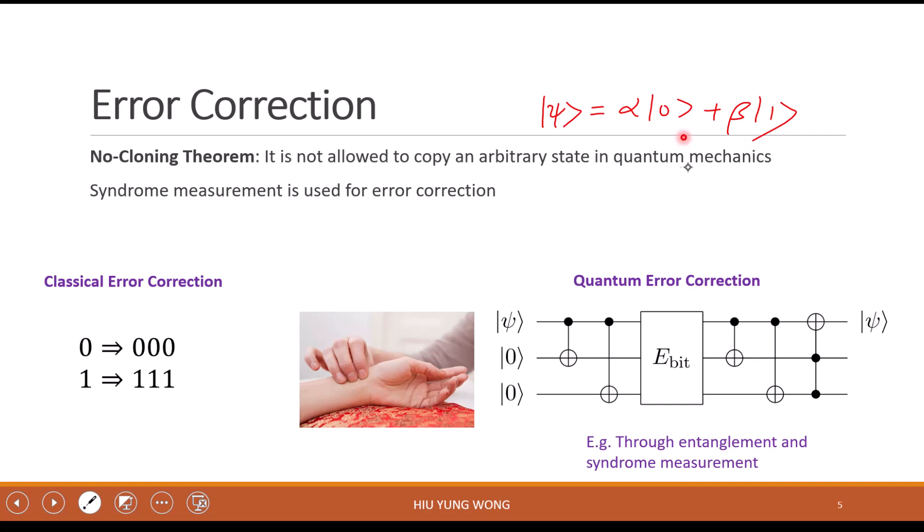Just remind you that in quantum computing this is one qubit. You can have two basis states, zero and one. In classical computing you either store zero or one. But in quantum computing a quantum bit can be a linear superposition of the basis states. This is the second time I've mentioned the basis state.